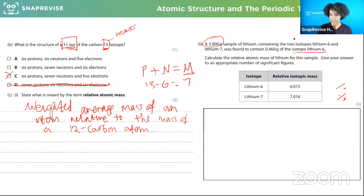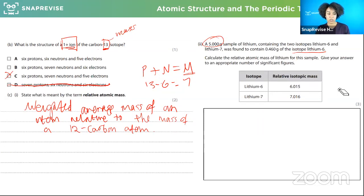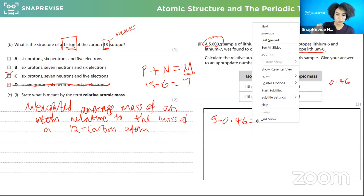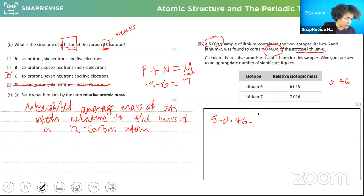Five-gram sample of lithium with two isotopes - lithium-6 and lithium-7, containing 0.46g of lithium-6. Calculate relative atomic mass. Remember you only divide by 100 if abundances are given as percentages. Here we work out abundance as fractions: 0.46/5 for lithium-6, and 5 - 0.46 = 4.54, so 4.54/5 for lithium-7.